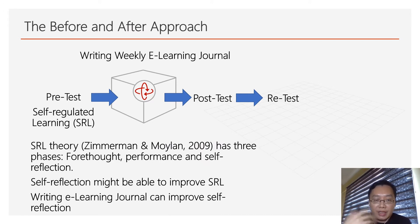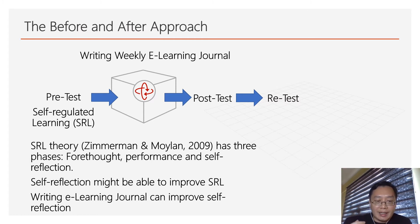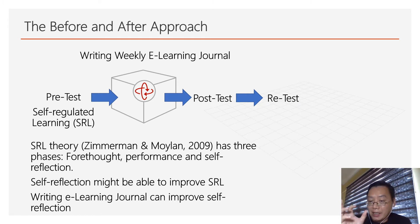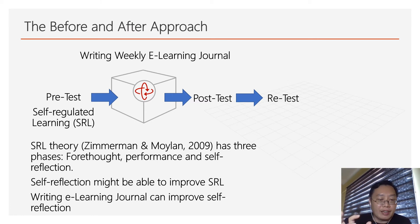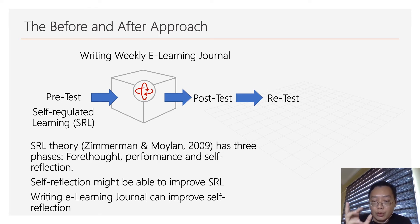I'm sharing with you an example, a study that I have done. I use writing of weekly e-learning journals to assess the impact on students' self-regulated learning. I have a pre-test and post-test. I have a theory that underpins the intervention — that is the e-learning journal — and the variables that I want to measure, that is the self-regulated learning. SRL theory by Zimmerman and Mellon actually has three components. According to these two, self-regulated learning has three components: forethought, performance and self-reflection.